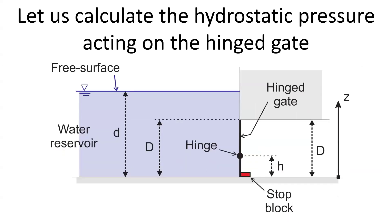As a starting point, let us calculate the hydrostatic pressure in the reservoir acting on the hinged gate. First and foremost, the water surface is an important boundary condition where the pressure is atmospheric, that is the relative pressure p equals zero at the water surface.